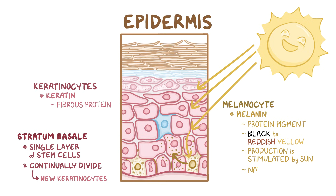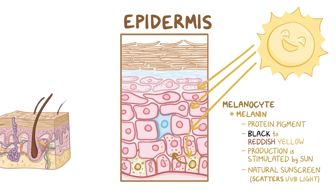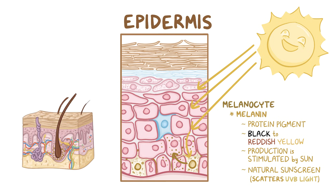Melanin acts as a natural sunscreen because its protein structure dissipates or scatters UVB light, which, if left unchecked, can damage the DNA in skin cells and lead to skin cancer. Melanocytes can also be found in the dermis, at the base of the hair follicle, where they transfer melanin to the keratinized cells that make up hair.